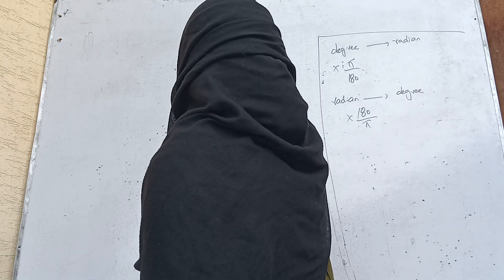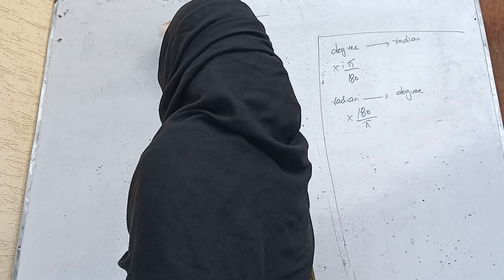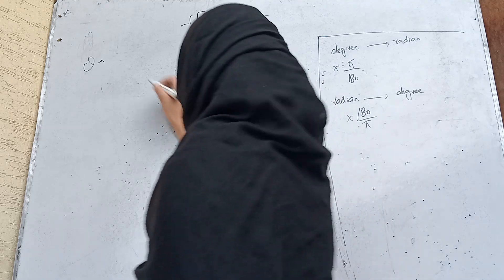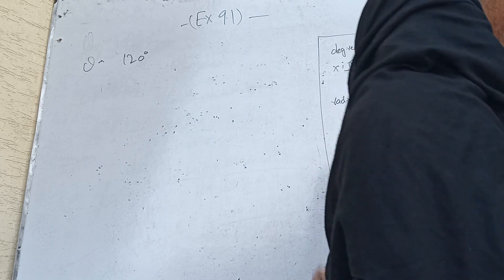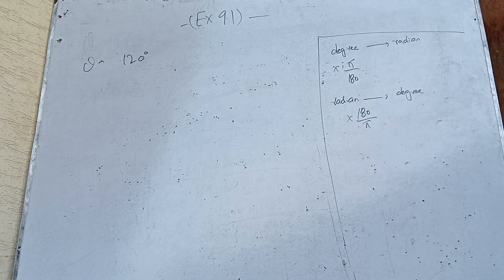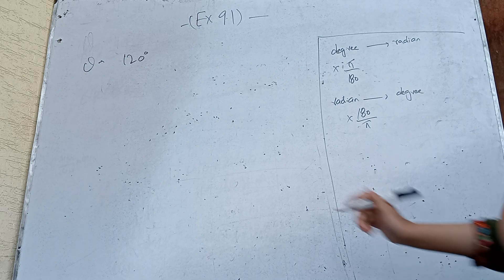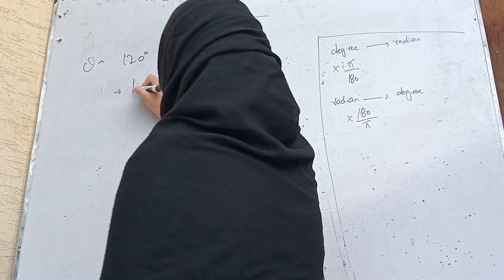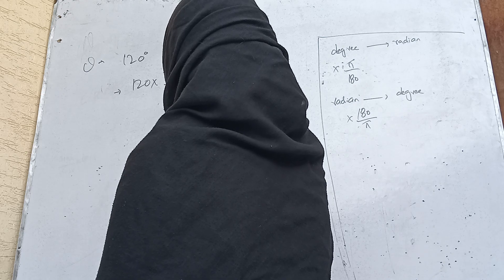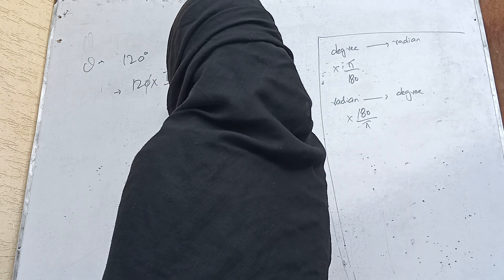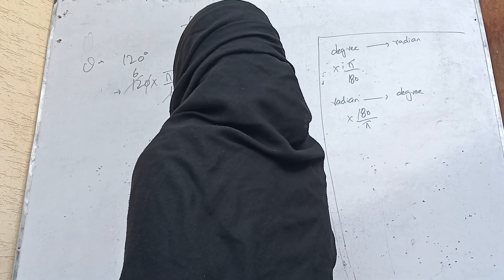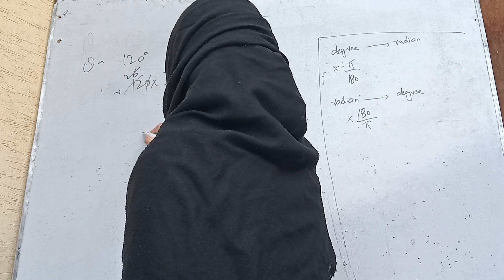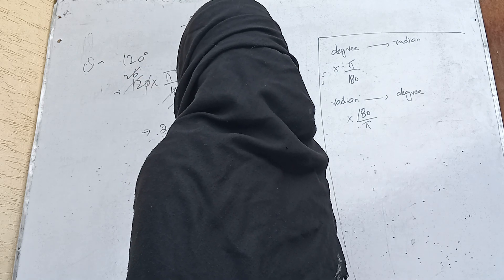So in the same case, the first question in Exercise 9.1 is 120 degrees. We convert degrees into radians by multiplying with π/180. So we have 120 × π/180. Simplifying: 120 and 180 share a factor of 60, giving us 2/3. So the required answer is 2π/3.